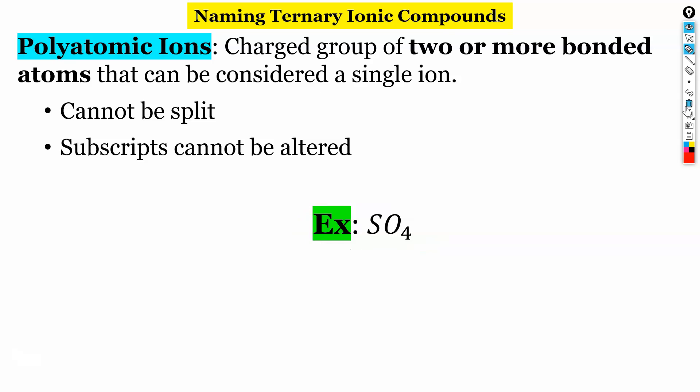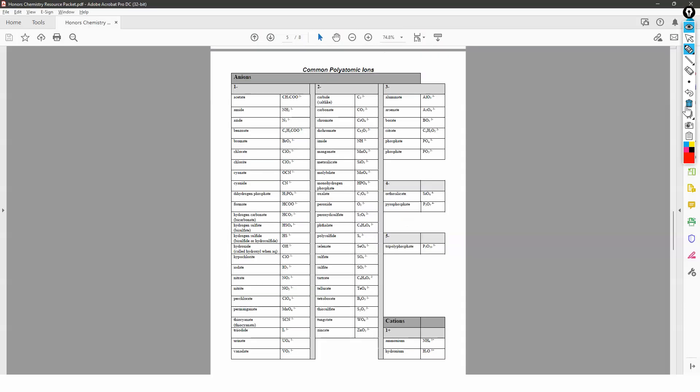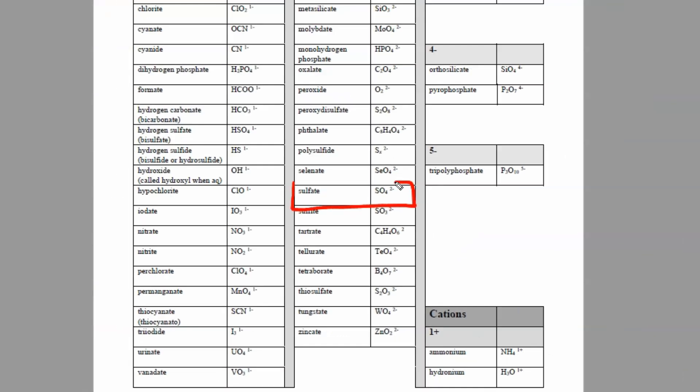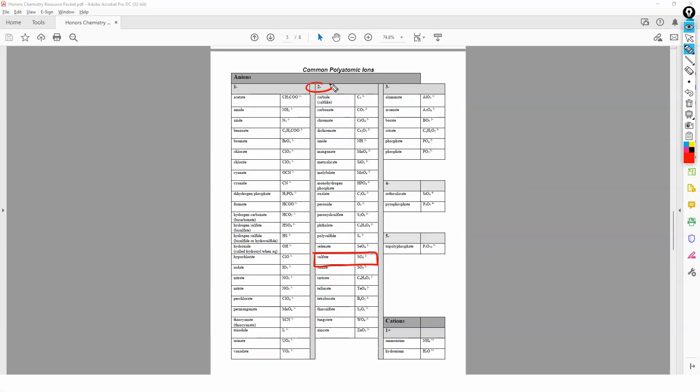And if you go to your resource packet, we have a page in the resource packet that has all of the polyatomic ions. So we can find the one that we were just working with, SO4. It's right here in the middle. It's sulfate. It's got a charge of minus two. It's got the name and the formula right there. So we're going to be referencing this throughout the video today.